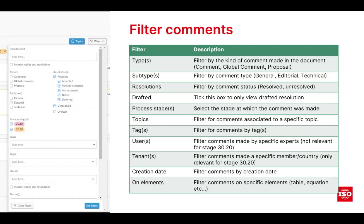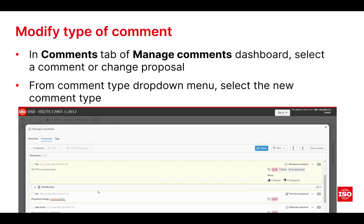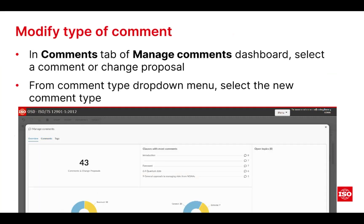The filters in the comments management dashboard and within the document have different options depending on the stage you're in. Generally speaking, you can filter comments by type, resolutions, the different stages, your topics and tags, the different users, as well as things like creation date or the type of element they're on. This can really help you — particularly when using topics and tags — to quickly organize your comments. You can also modify the type of comment from the comments dashboard using a little dropdown next to the comment type.